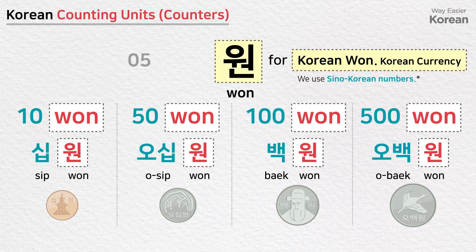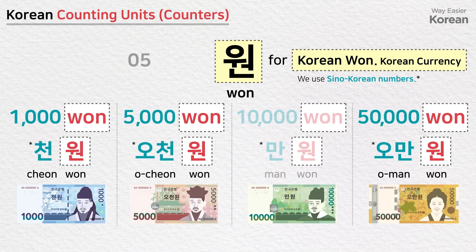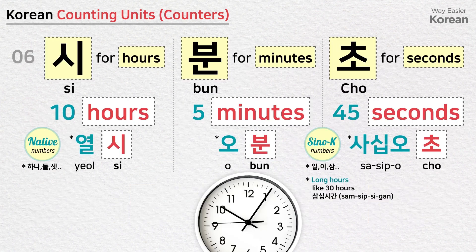원 is used for Korean won (Korean currency). We use Sino-Korean numbers for Korean won: 10원, 50원, 100원, 500원, 1000원, 5000원, 만원, 50,000원. When telling the time, we use the counter 시 for hours with native Korean numbers — 열 시 (10 o'clock). Hours use native Korean numbers. 분 is used for minutes with Sino-Korean numbers — 5분 (five minutes). 초 is used for seconds with Sino-Korean numbers — 45초 (45 seconds).